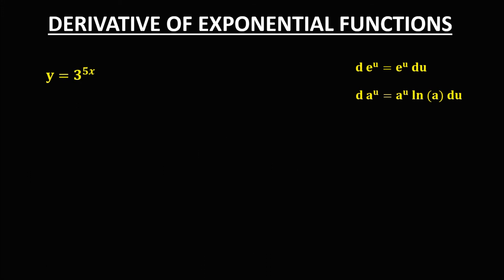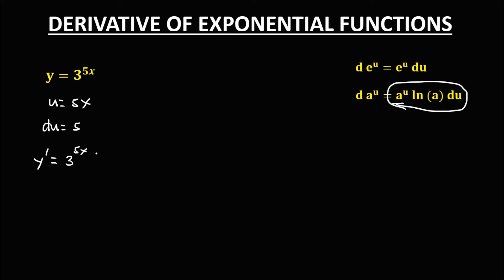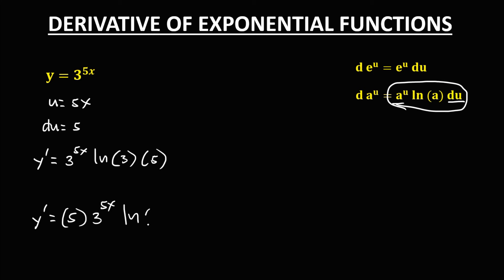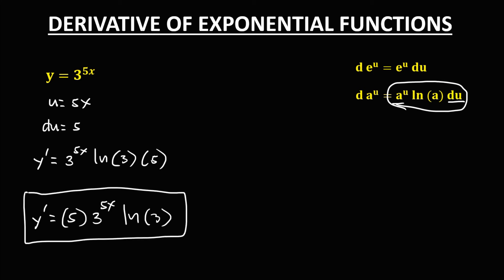Then for this given, using the a to the power u formula: u is equal to 5x, and the derivative of u is 5. So we have y prime equals a to the power u, that's 3 to the power 5x, times ln a — so a is 3 — times the derivative of u, which is 5. Therefore y prime is equal to 5 times 3 to the power 5x times ln 3. So this is now the derivative.